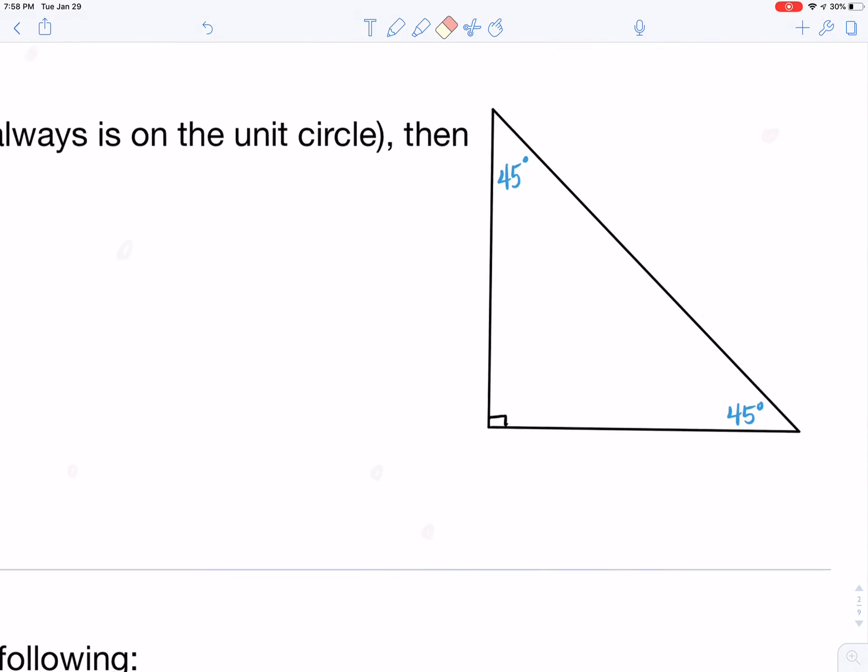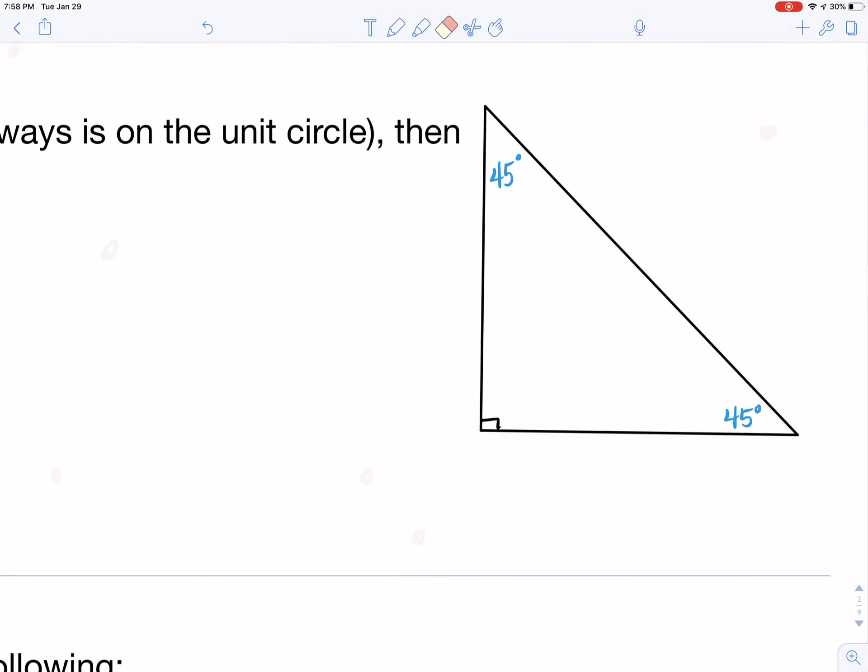You'll notice I've got an example down here of the 45-45-90 triangle. Remember in the last video we talked about the concept of in triangles: the small side will always be opposite the small angle, medium opposite medium, large opposite large.